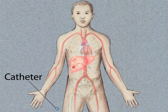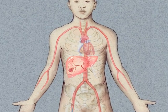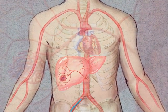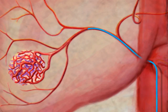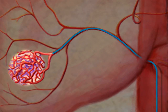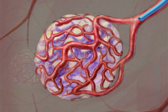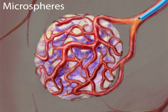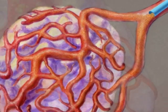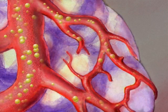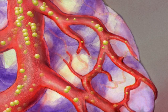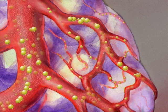A catheter is inserted into the femoral artery and advanced until it reaches the common hepatic artery. Once the catheter is accurately positioned, an angiogram is performed to visualize the tumor. Microspheres are then injected into the catheter and released inside the feeder vessel, where they slow blood flow as they travel and settle in the surface and interior vessels of the tumor.